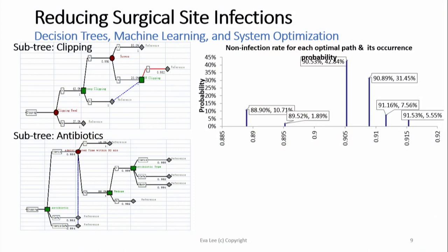Decision trees — Mayo talked about that and Lisa asked about decision trees. This is a decision tree designed for surgical site infection reduction. The green nodes are decision nodes and the red circles are chance nodes — meaning what is the chance of doing different things at that point. We want to know out of hundreds of different steps, if we're going to make changes, what are the key points? Because if you try to change everything, you may introduce new errors.